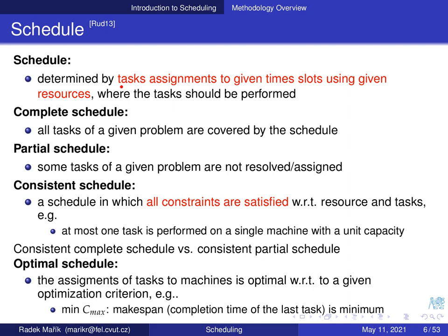A schedule involves tasks, time slots, and resources. You need to assign tasks to given time slots using given resources in such a way that the tasks can be accomplished. Similar to planning and constraint satisfaction problems, you can consider a complete schedule where all tasks of a given problem are covered — you know their times and resources — or there can be a partial schedule where only some tasks are resolved and the remaining ones are not yet properly assigned.